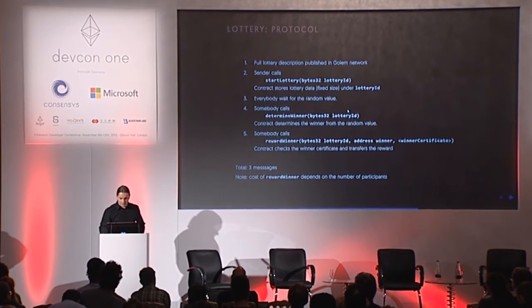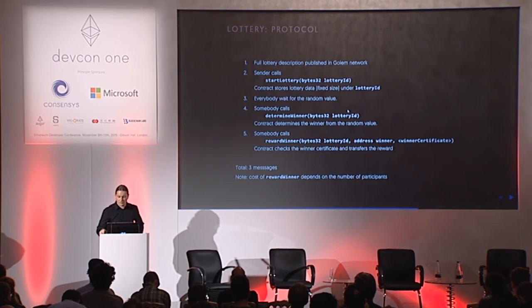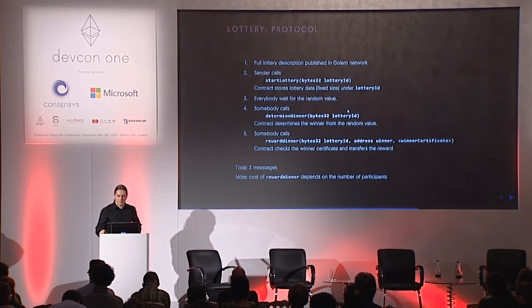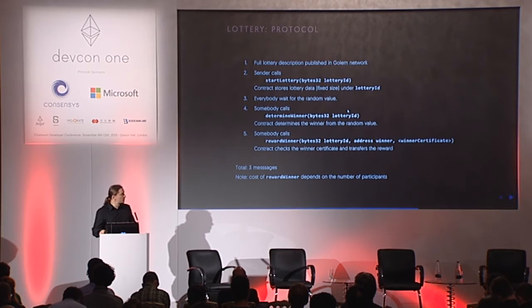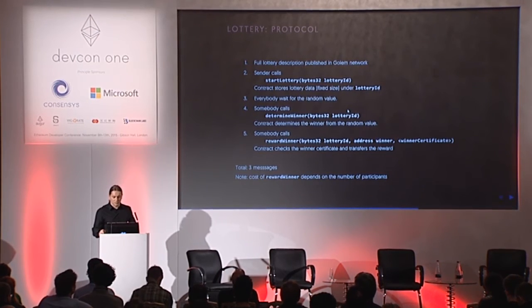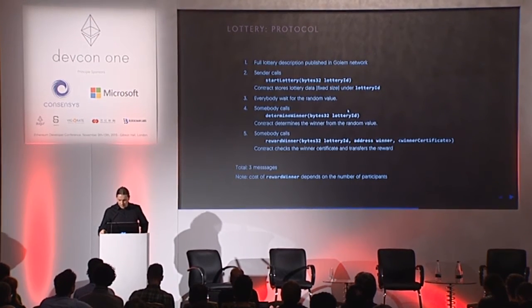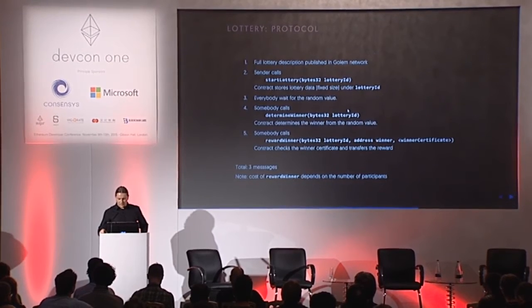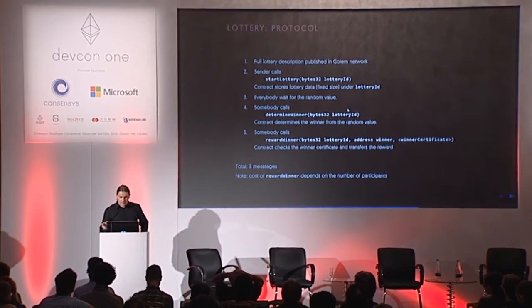What's important here is that the winner's certificate is pretty similar to what we had in the sub-accounts case — it's a list of pairs of node addresses and values. Each value is proportional to the compute resources that node spent for the task or sub-task. This structure is linear in the number of nodes.